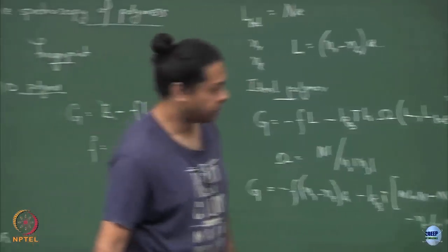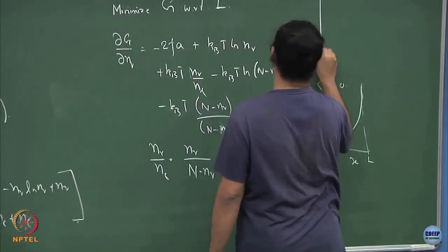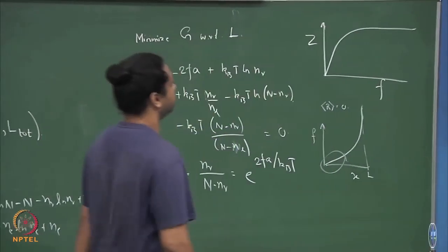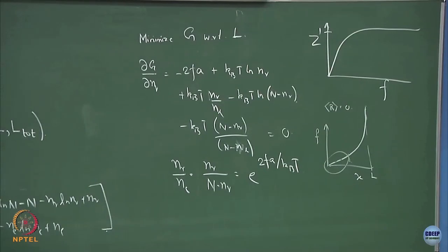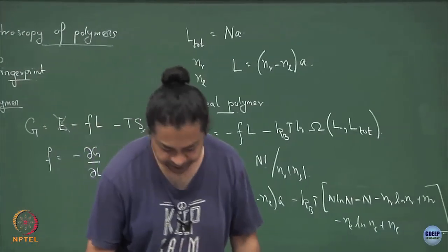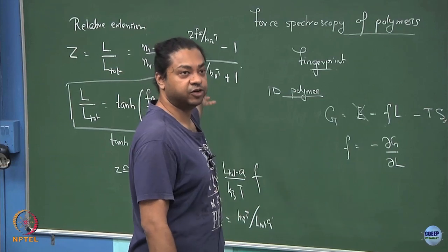If you plot this relative extension as a function of force, you get a curve that is linear at small forces and saturates to 1 at large forces — precisely the sort of behavior seen in DNA double-strand pulling experiments. Furthermore, if you know the force and temperature, this tells you precisely what the Kuhn length is for the polymer, in order to model it as a freely jointed chain.